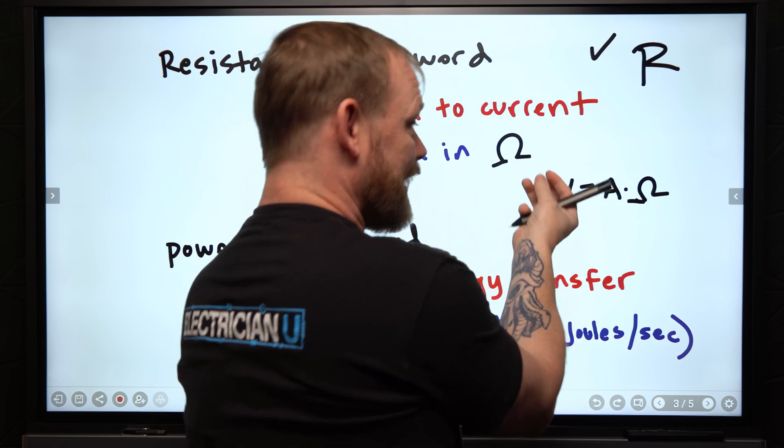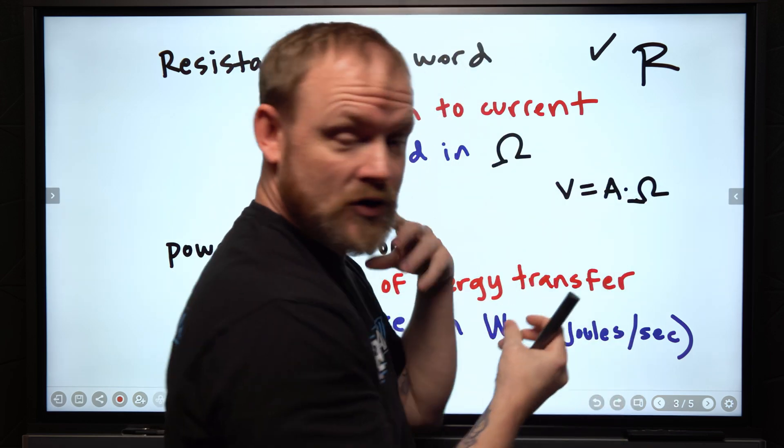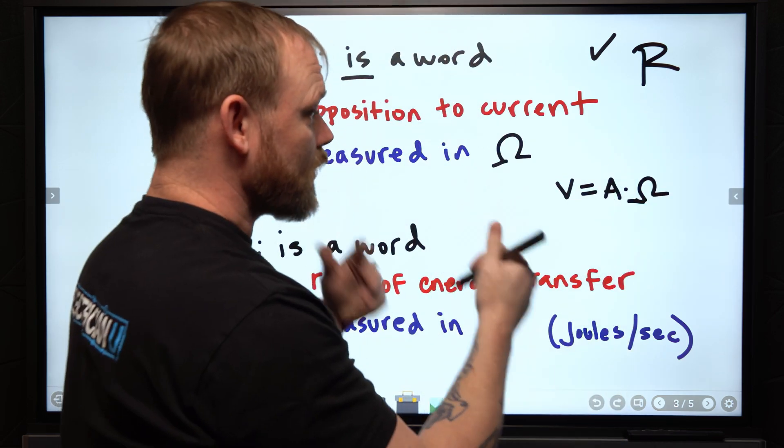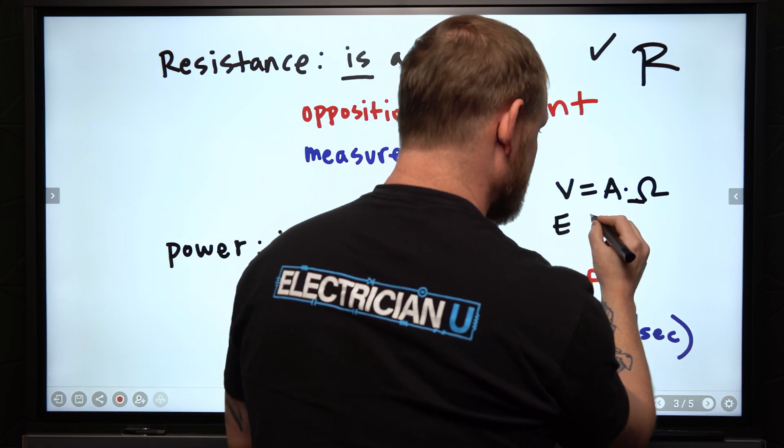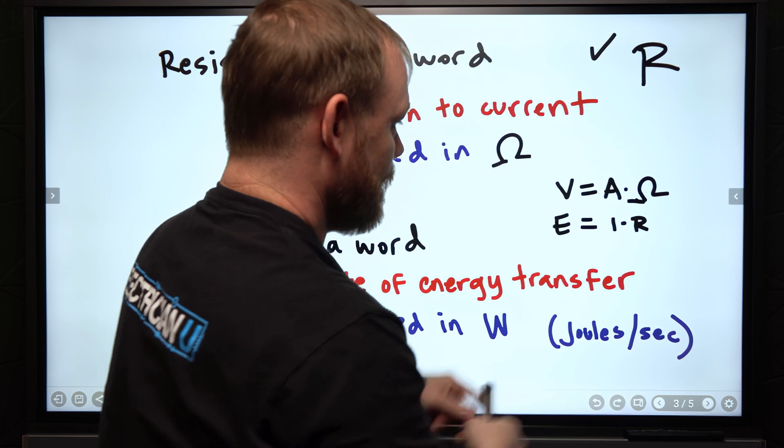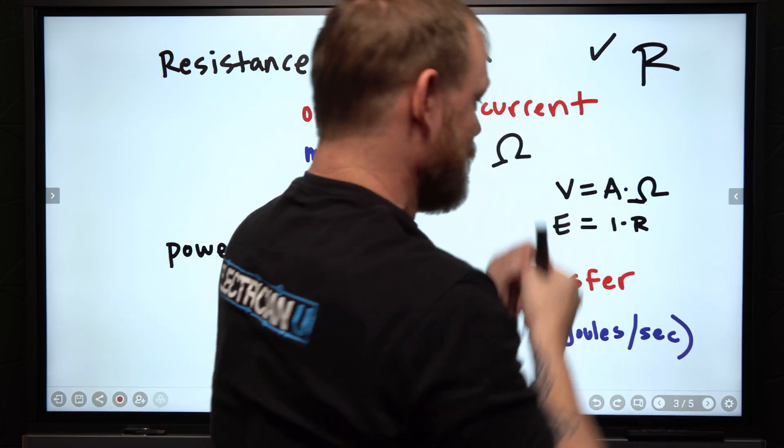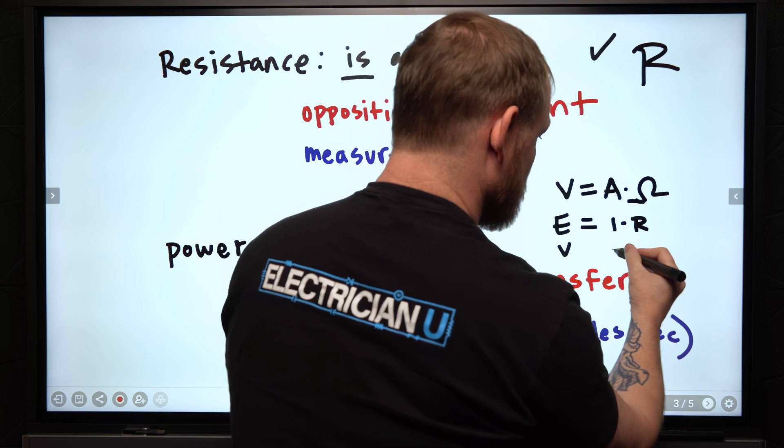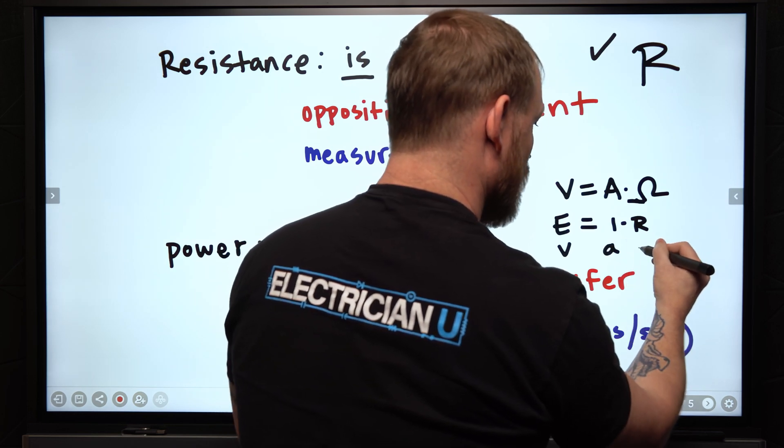Because we're measuring something in volts, measuring something in amps, measuring something in ohms. Otherwise, you have to use E equals I times R. The thing I'm measuring, the thing I'm measuring, and the thing I'm measuring. And for each of those, we're measured in volts, we're measured in amps, and we're measured in ohms.